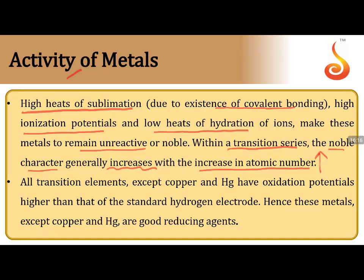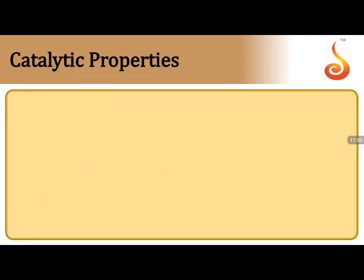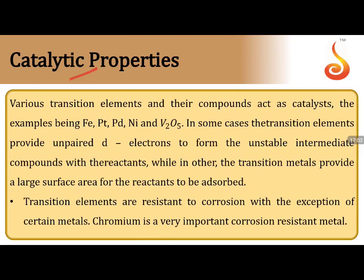Moving from chromium to molybdenum to tungsten — all in +6 oxidation state — chromium is the strongest oxidizing agent while molybdenum and tungsten remain unreactive and inert. All transition elements except copper and mercury have oxidation potentials higher than the hydrogen electrode, making them good reducing agents. Silver, platinum, and certain other metals are exceptions, as seen in the electrochemical series.